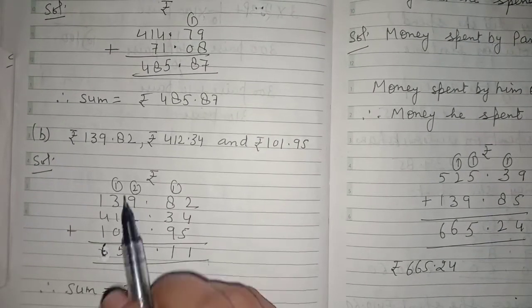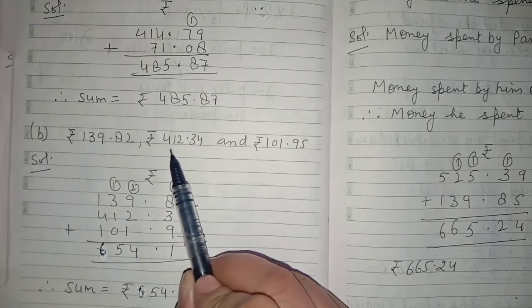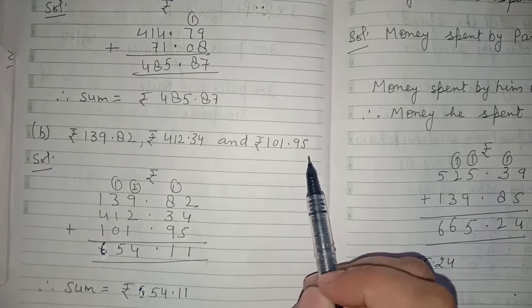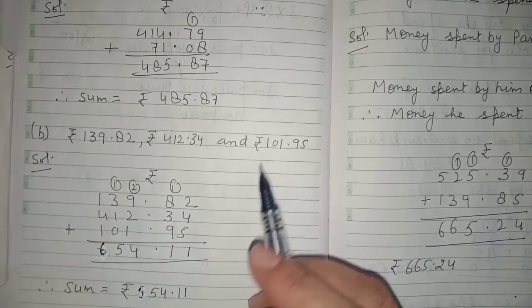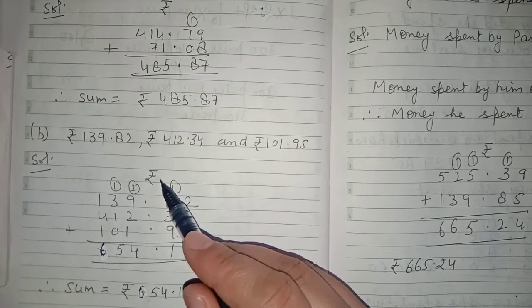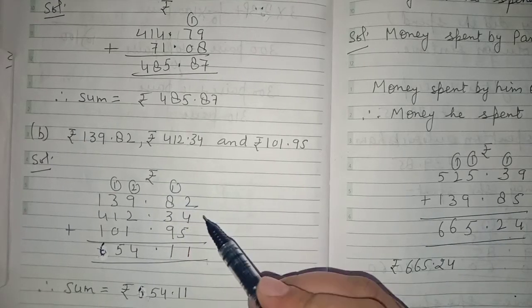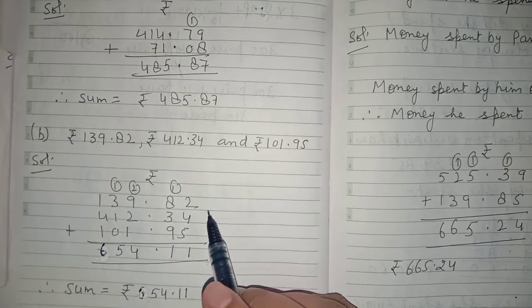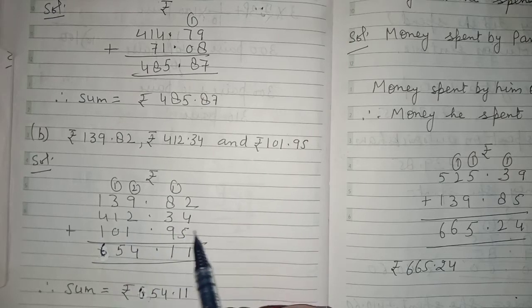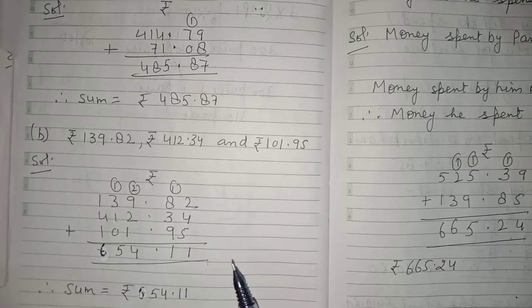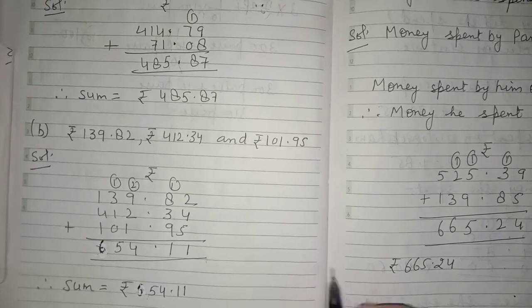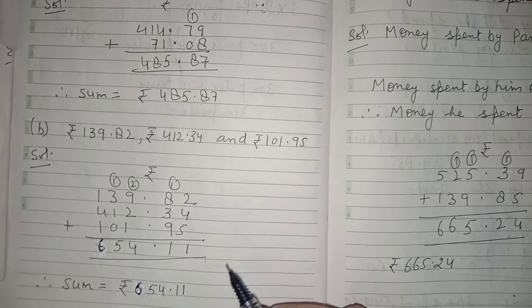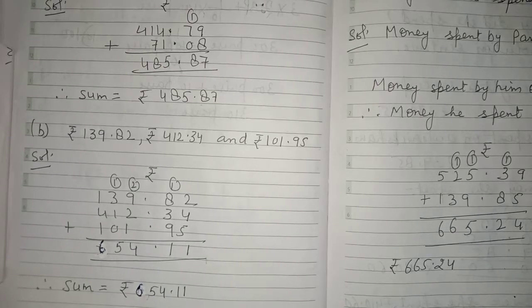Now Part b: Rupees 139.82, Rupees 412.34, and Rupees 101.95. We have to add these three amounts. In the same way, we will write the unit rupees in common on the top, then write the three amounts: 139.82, 412.34, and 101.95. We add them and get the final answer as Rupees 654.11.